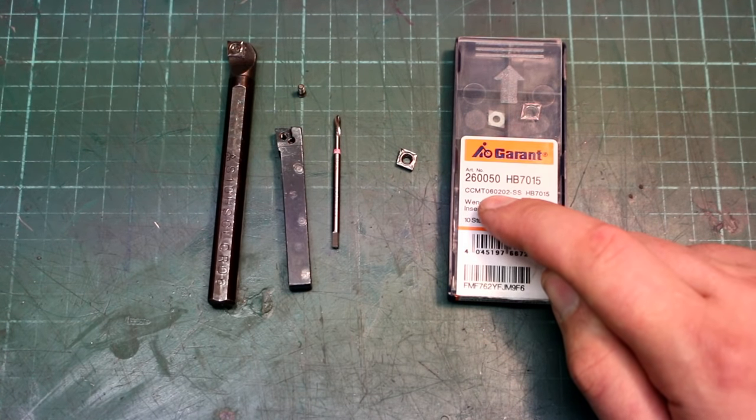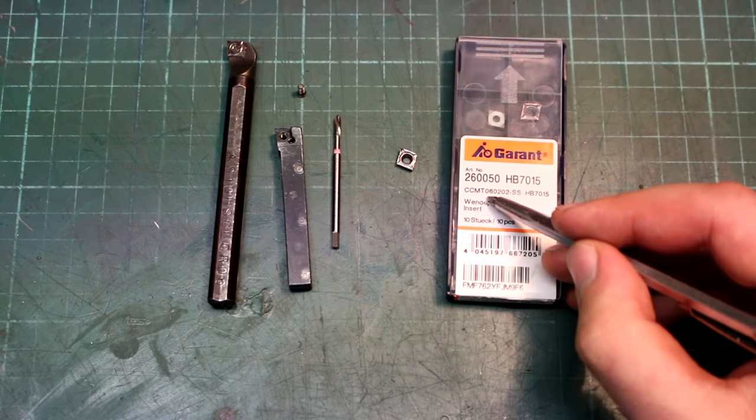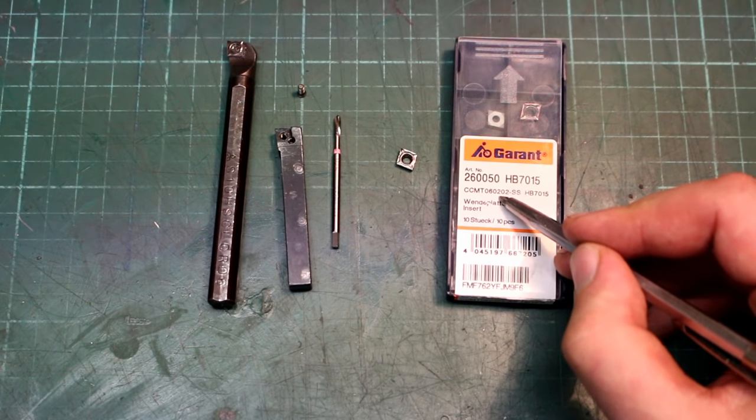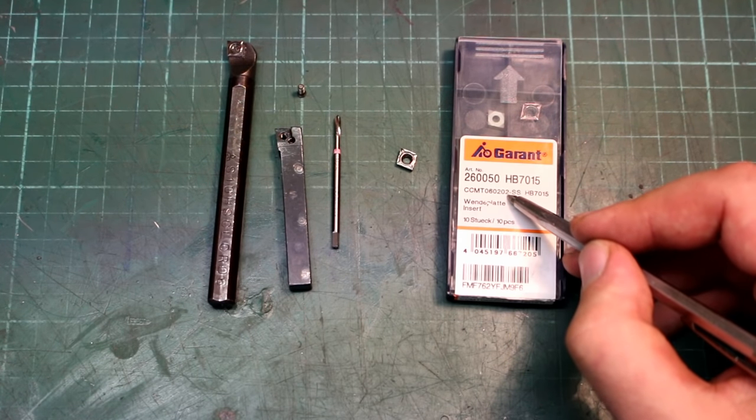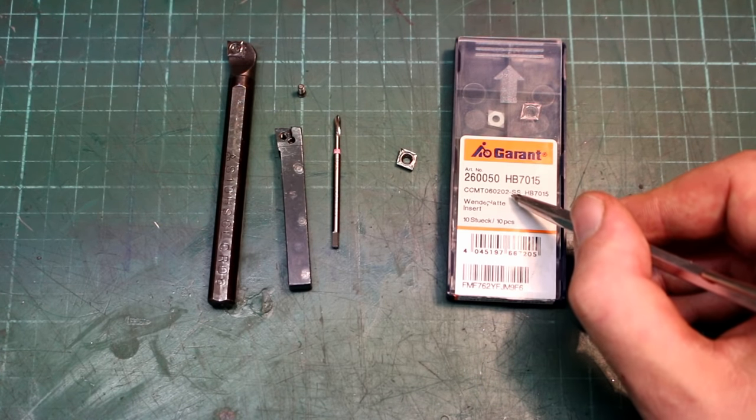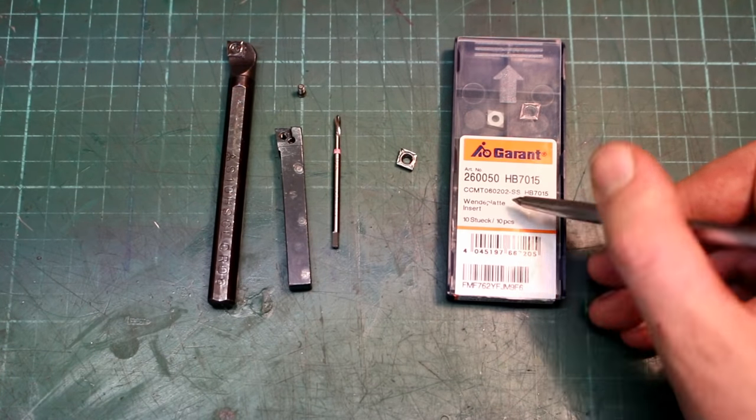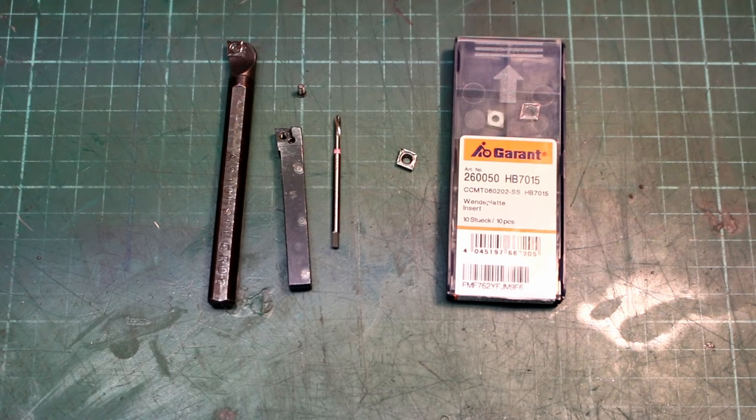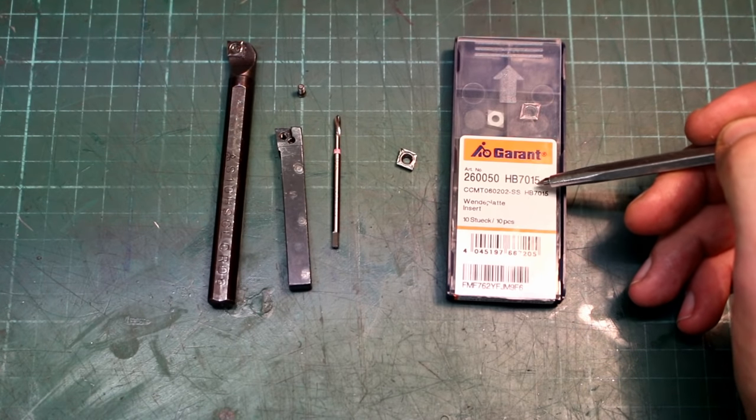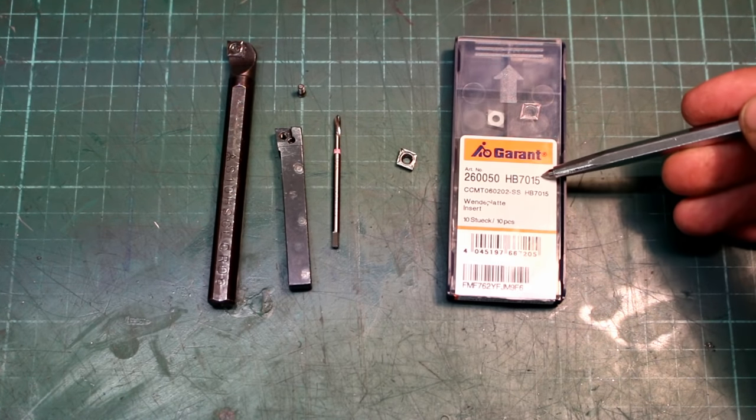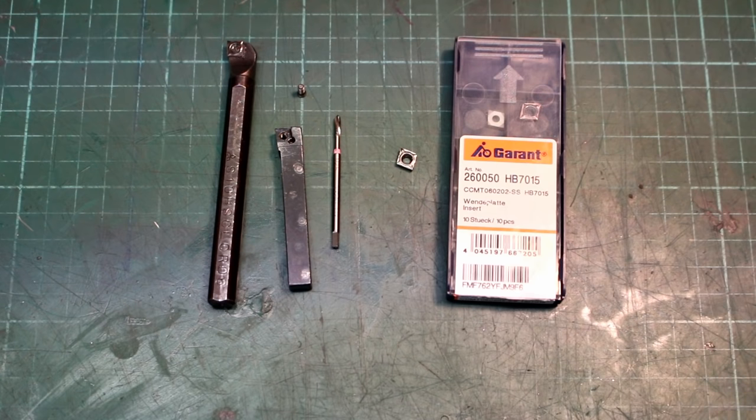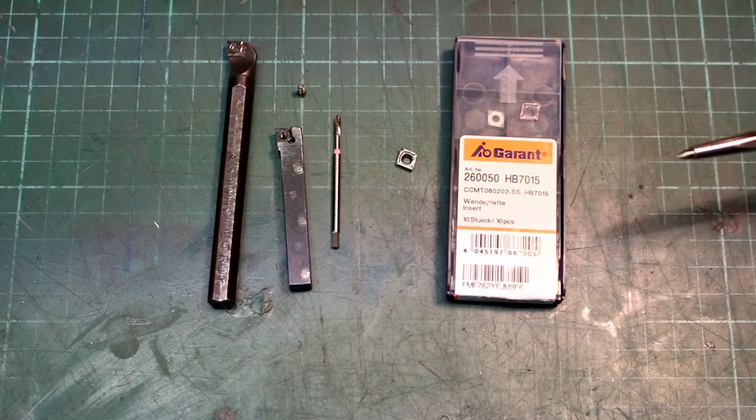CCMT-0602. 06 is the length of the side as I showed you. 02 is the thickness and the next two numbers are the nose radius. That's 0.2 millimeters. And the appendix SS is the form of the chip breaker. Up here HB 7015. This is just the grade of carbide they use and 7015 is a grade for light turning work and very light interrupted cuts.